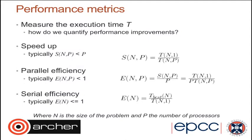Now we're going to talk about performance metrics. When we think about how well the code is performing, we think in terms of the execution time — that is, we measure how long it takes to run. Typically you want the execution time t to be as small as possible; you want your code to run as fast as possible. P is the number of processors, and N is the problem size, which quantifies the problem you're giving your code to work on.